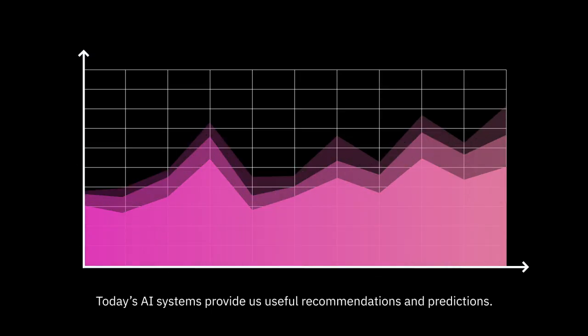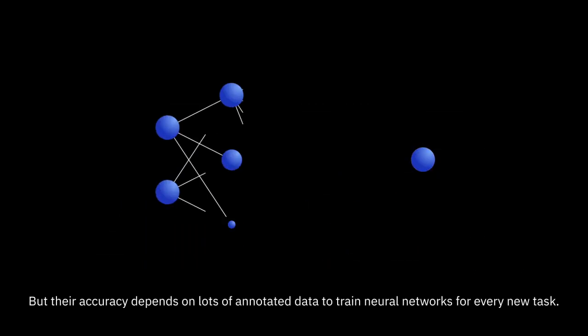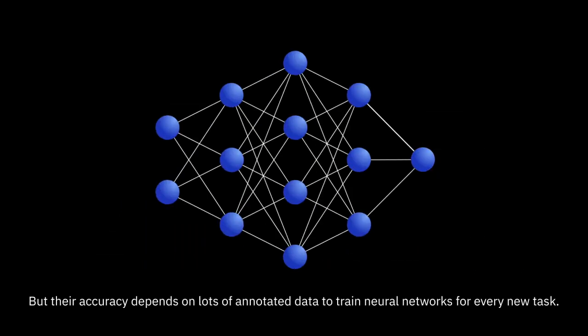Today's AI systems provide us useful recommendations and predictions, but their accuracy depends on lots of annotated data to train neural networks for every new task.